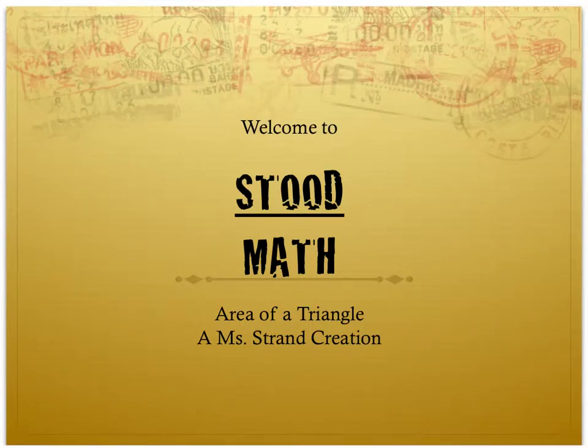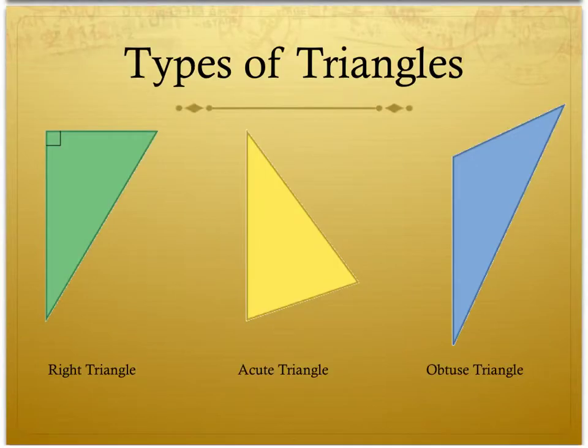Welcome to Math Understood, and today we're going to learn how to calculate the area of a triangle. There are three types of triangles that we can use when calculating the area of a triangle. They are right triangles, acute triangles, and obtuse triangles.